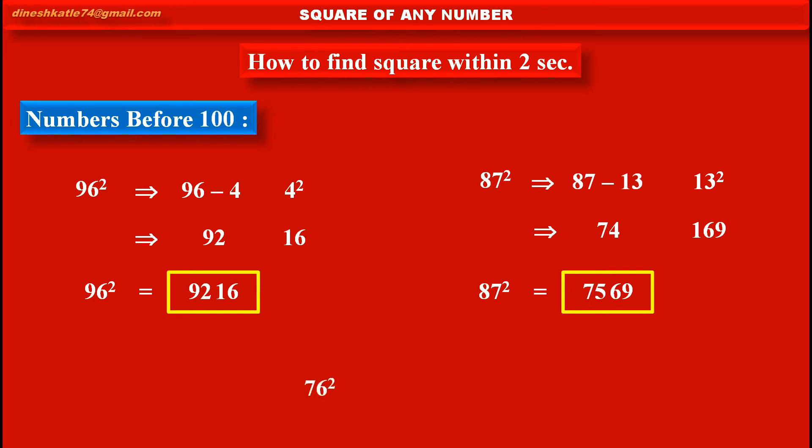Now, see one more example: 76 square. Here, according to above method, on fast track, we can solve it as... Difference between 76 and 100 is 24. And square of 24 is 576.